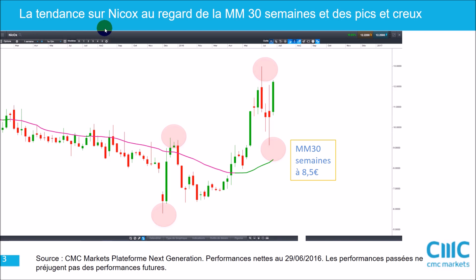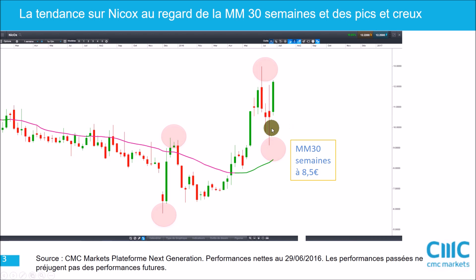On va commencer par une analyse de la tendance en cours. Si vous débutez l'analyse technique, n'ayez pas peur, ne vous laissez pas impressionner. Il ne s'agit que de chandeliers — chacun des bâtons correspond à une semaine de cotation, indiquant les plus hauts, les plus bas, le niveau d'ouverture, le niveau de clôture. On utilise la moyenne mobile à 30 semaines comme indicateur de suivi de tendance : c'est la moyenne des 30 dernières semaines en clôture. Comme vous pouvez le voir, on est au-dessus de la moyenne mobile à 30 semaines qui est en train de monter, ce qui signifie que la tendance est établie à la hausse. C'est confirmé par l'observation des pics et des creux : les pics sont ascendants et les creux sont ascendants, confirmation que la tendance est haussière sur Nikox.